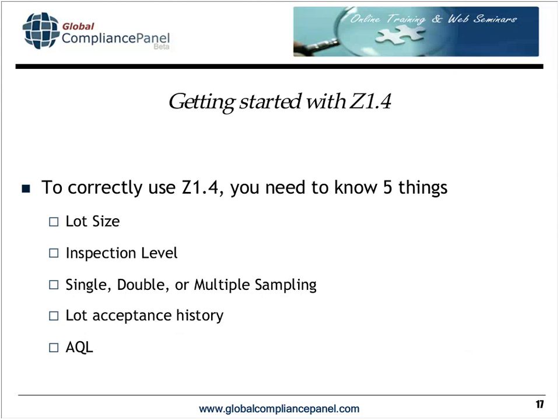To correctly use Z1.4, you need to know five things: the lot size, the inspection level, whether you're doing single, double, or multiple sampling, the acceptance history of this part from this supplier, and the AQL — the acceptable quality level. The lot size is typically determined by purchasing and materials management. The quality engineer typically determines the inspection level, whether you're using single, double, or multiple sampling, and the AQL. The lot history determines the switching rules.